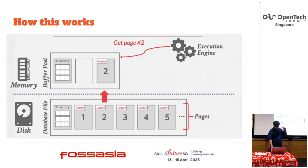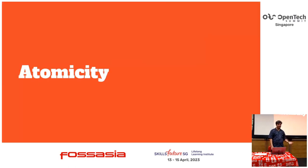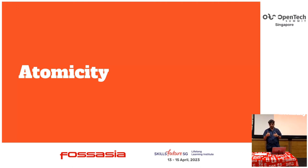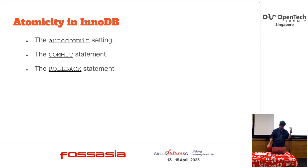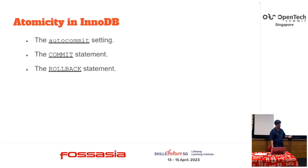InnoDB is ACID compliant. ACID — the A means atomicity. The key idea is that either everything in a transaction happened or nothing happened. The NoSQL movement was quite hip 10 years ago, but eventually most NoSQL systems ended up adding transactions again because transactions are critical for many use cases. Especially in payments, transactions are extremely critical — you want to make sure that if you have two database operations, either both succeeded or nothing happened. If you fire a SQL statement without a transaction it'll be auto-committed by default, and you also have commit and rollback statements.